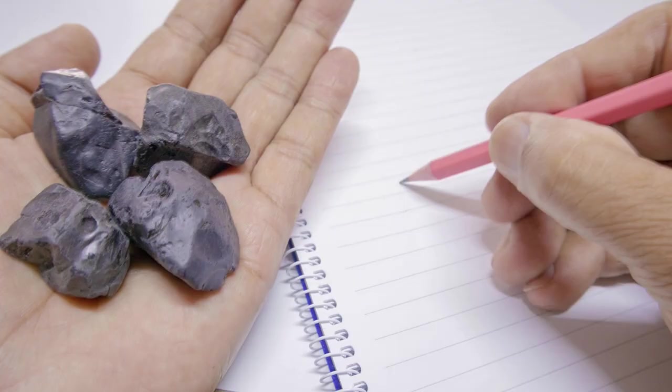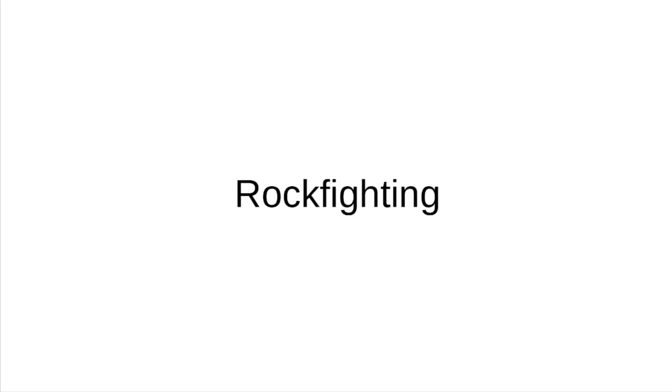So, a covert method of communication develops within stoners, so that they know where and when to rock up for some gravelly, silicate-on-silicate action. This language, known as the rockfighting language, is what the rest of this video will be about.